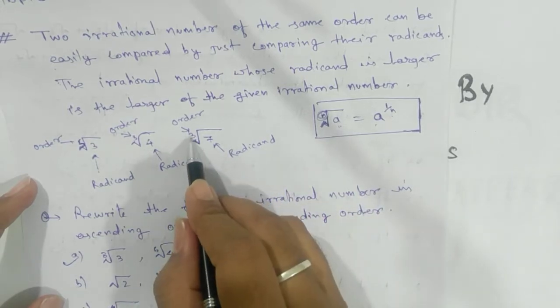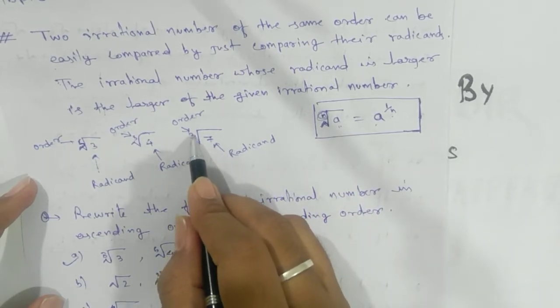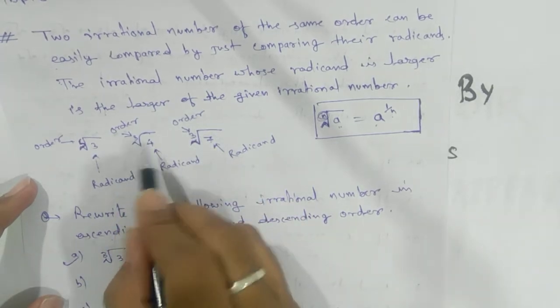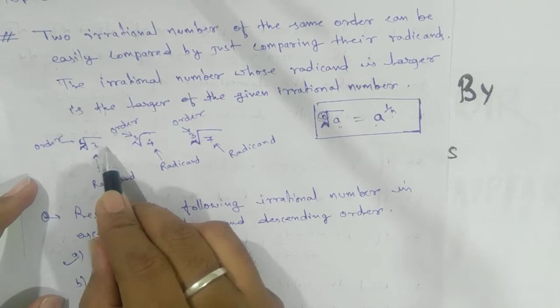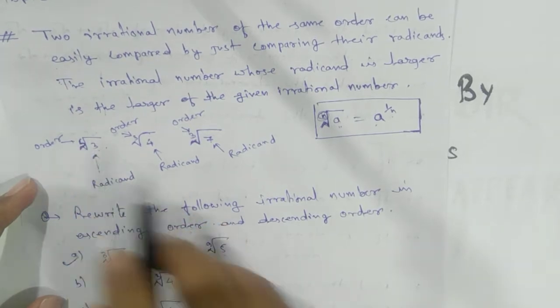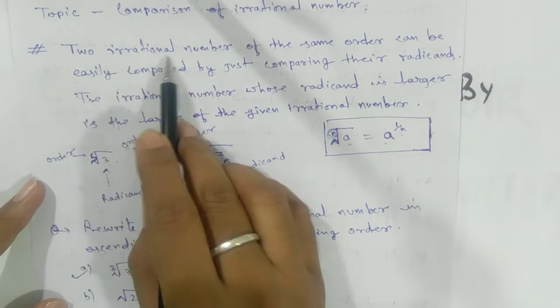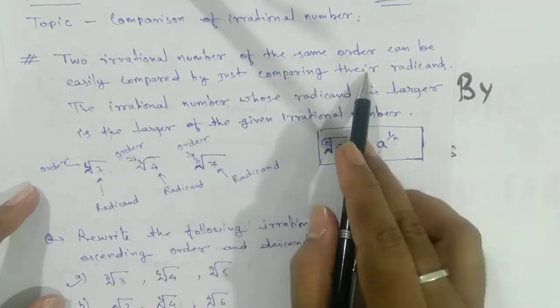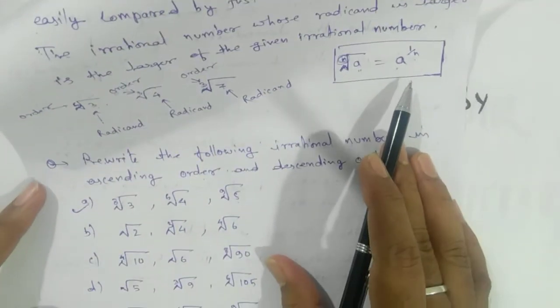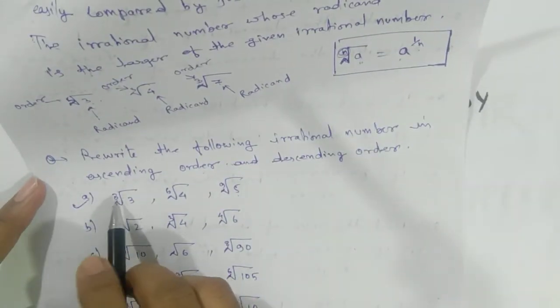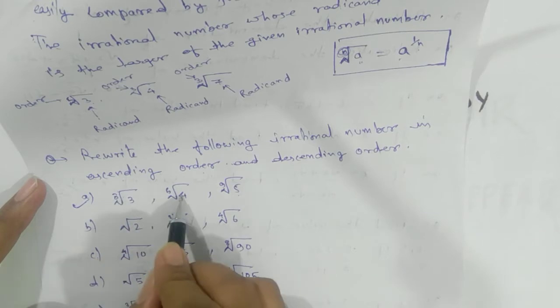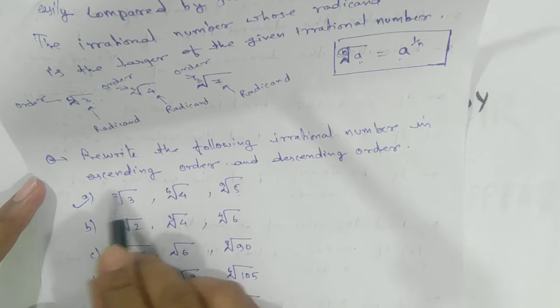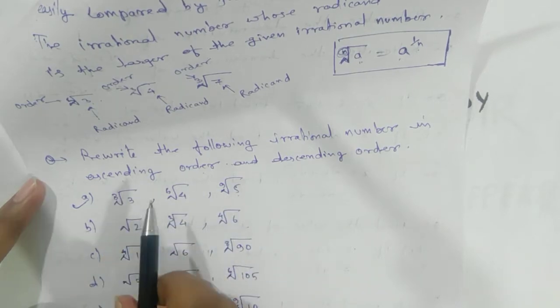Here cube root of 7, that means 3 is the order and 7 is radicant. Cube root of 4, and 5th root of 3 where 5 is order and 3 is radicant. Two irrational numbers of the same order can easily compare by just comparing their radicants. That means our first target will be to make all these irrational numbers in the same order.